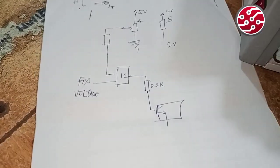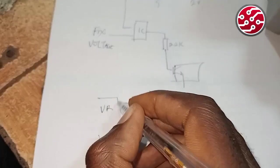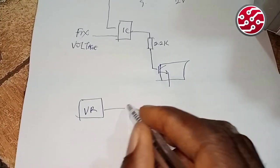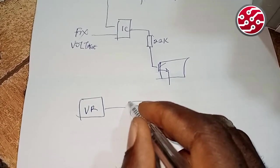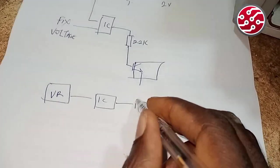Let me sketch it again. Variable resistor to IC, from the IC to transistor.